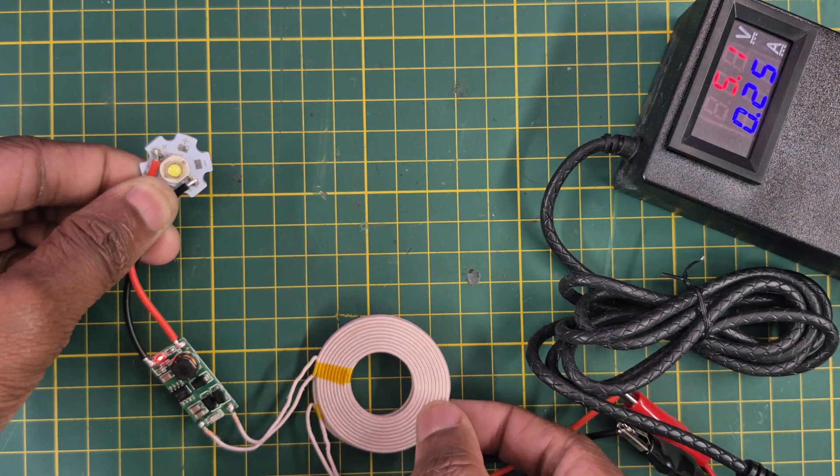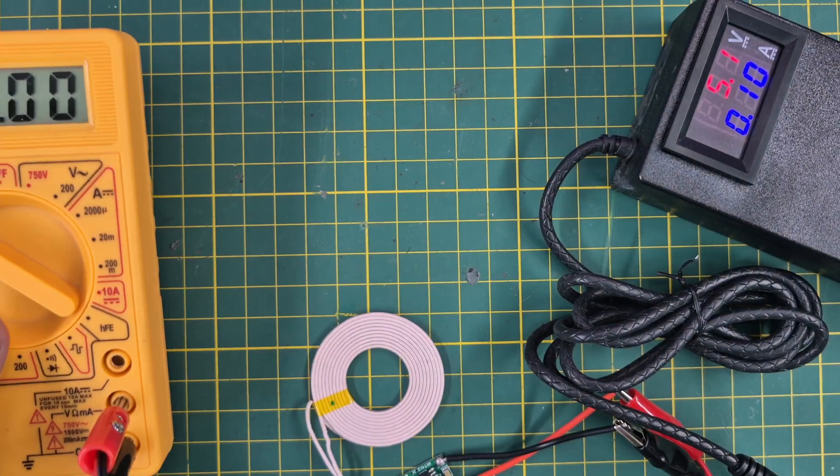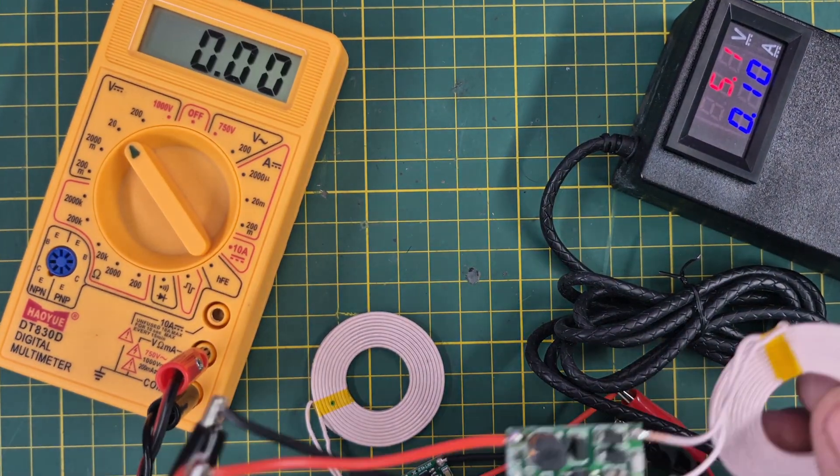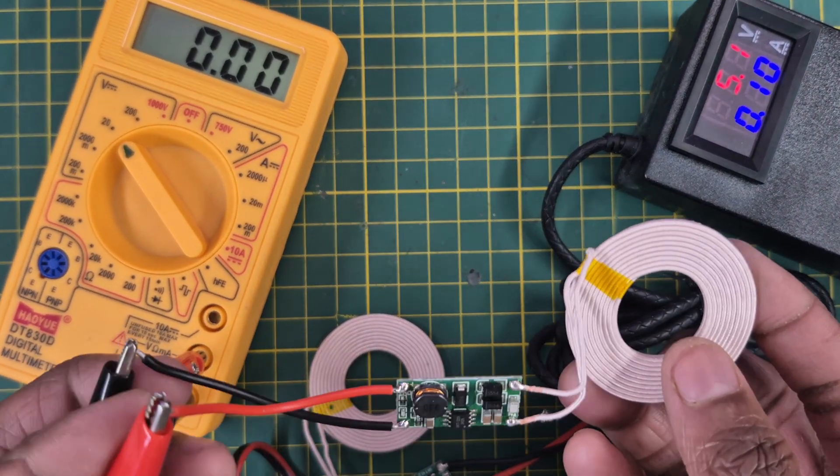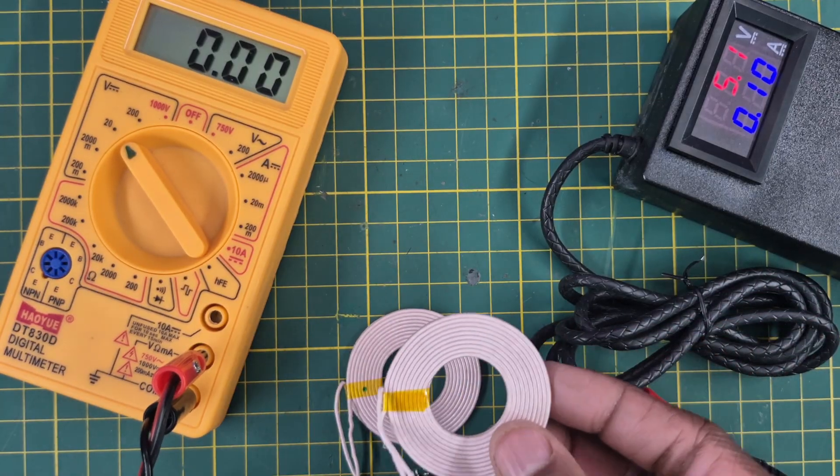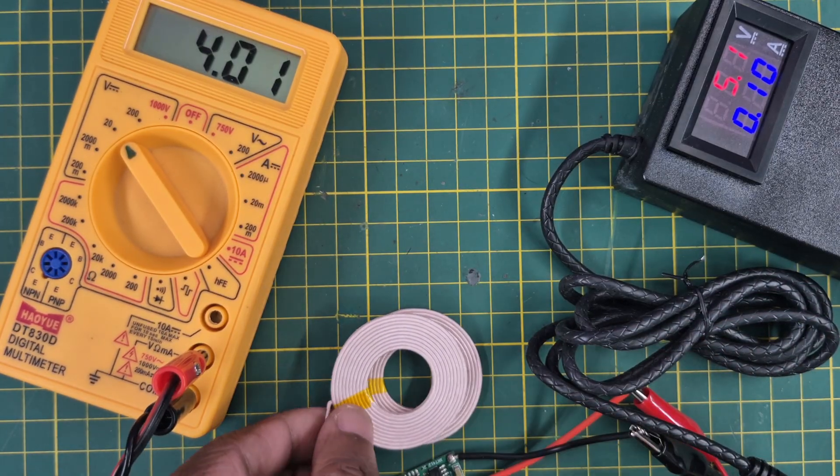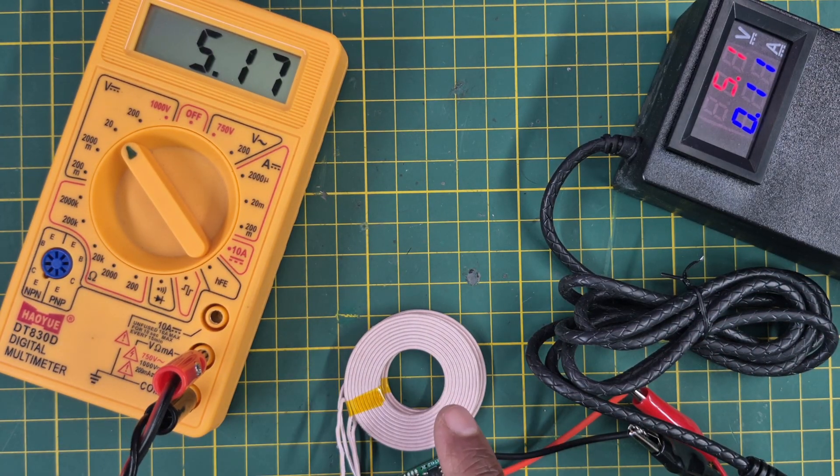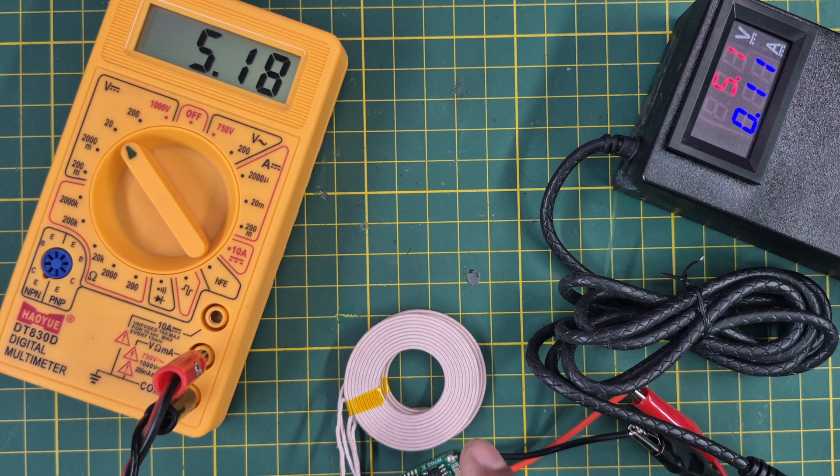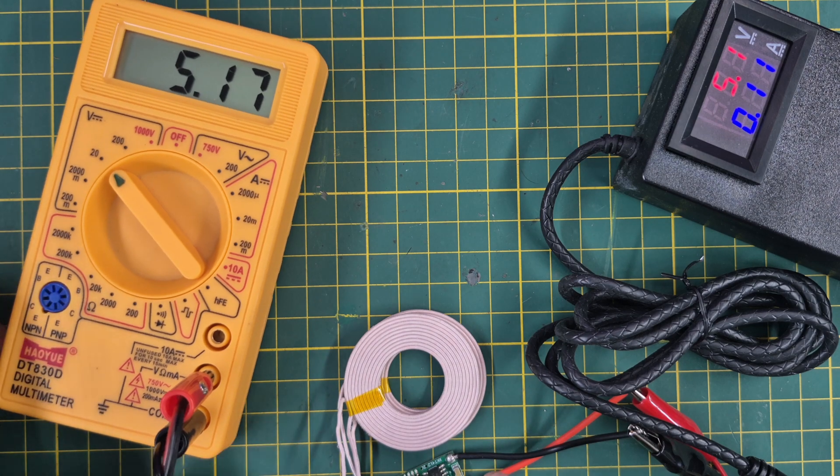Now we will test the output voltage to see how much we are getting. I have connected this module to the voltmeter. Here we are getting 5.17 volts.